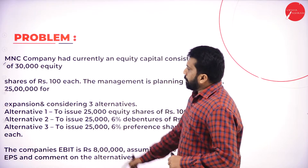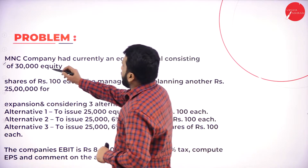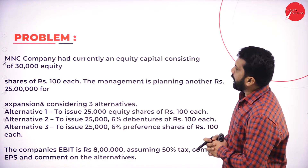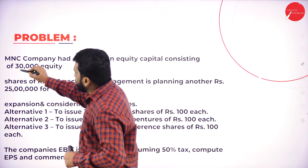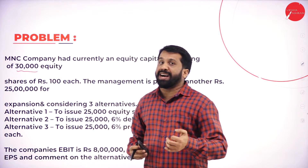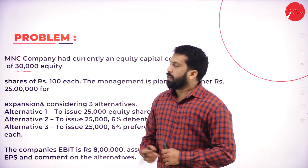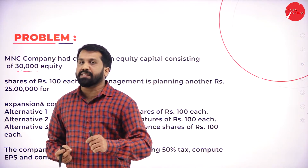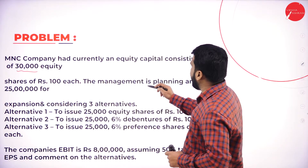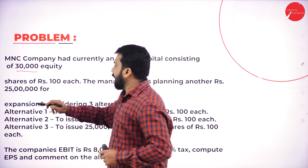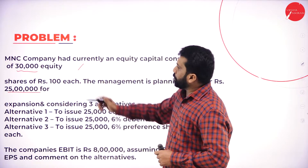The MNC company currently has an equity capital consisting of 30,000 equity shares. When rupees are not mentioned, we consider it as the number of shares. The shares are of rupees 100 each. The management is planning to raise another rupees 25 lakh. So already they have 30,000 equity shares of Rs. 100 each, and now the company requires 25 lakh more.